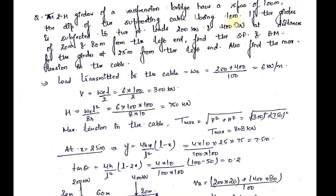Now let us do the second question on a two-hinged stiffening girder. The two-hinged girder of a suspension bridge has a span of 100 meters and the dip of the supporting cable is 10 meters. The girder is subjected to two point loads of 200 kilonewtons and 400 kilonewtons at distances of 20 meters and 80 meters from the left end. Find the shear force and bending moment at 25 meters from the left end, and also find the maximum tension in the cable.